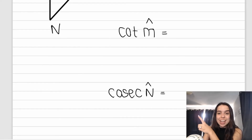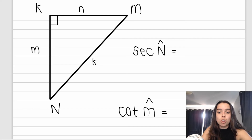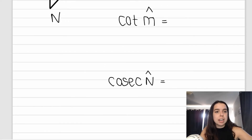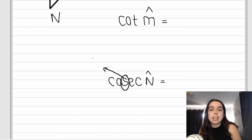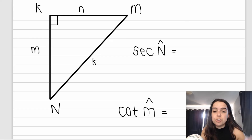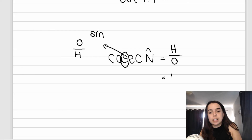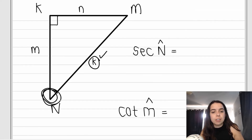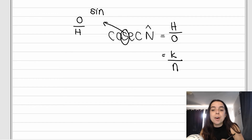I want you to try cosec of angle N. Look at the triangle quickly. Remember, you're looking for cosec of angle N. The third letter tells me which reciprocal I'm dealing with. The third letter is S, so cosec is the reciprocal of sin. Sin is opposite over hypotenuse, which means that cosec is hypotenuse over opposite. So if you look at the triangle - remember we're working with angle N - what is the hypotenuse of this triangle? It is little baby K. And what is opposite angle N? Opposite angle N is little baby N. So it's baby K over baby N.